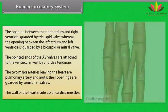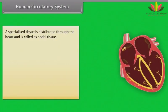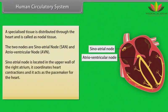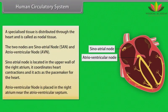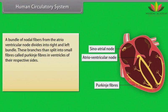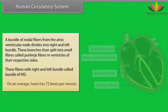The wall of the heart is made up of cardiac muscles. A specialized tissue distributed through the heart is called nodal tissue. The two nodes are the sino-atrial (SA) node and the atrio-ventricular (AV) node. The SA node is located in the upper wall of the right atrium; it coordinates heart contractions and acts as the pacemaker. The AV node is present in the right atrium near the AV septum. A bundle of nodal fibers from the AV node divides into right and left bundles, which split into Purkinje fibers in the ventricles — collectively called the bundle of HIS. On average, the heart beats 72 times per minute.